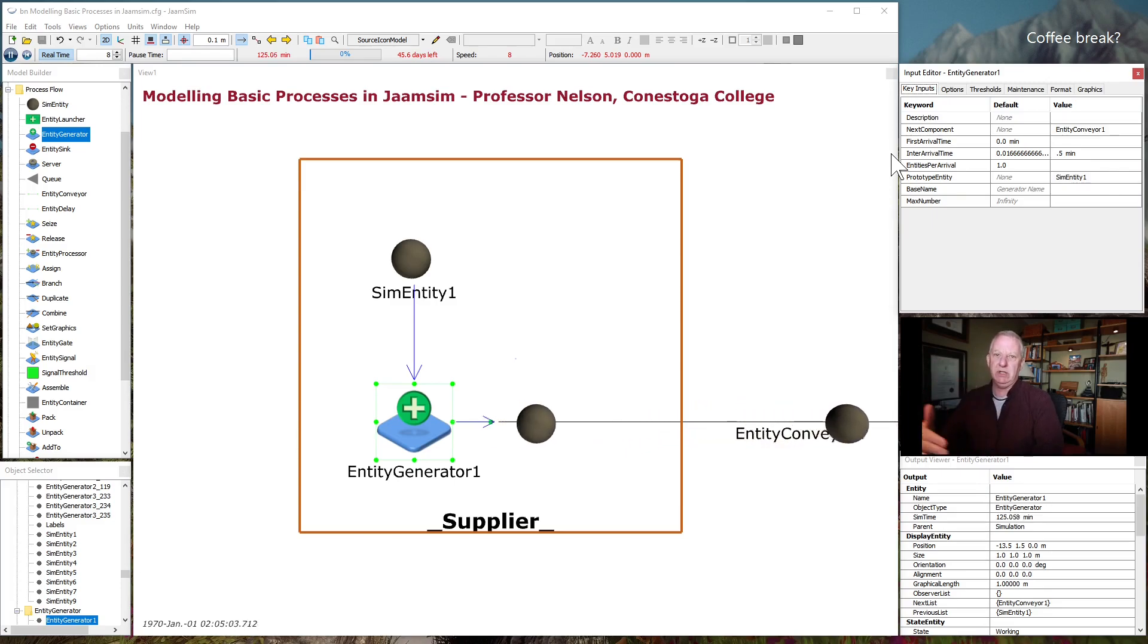Both the sim entity and the entity generator come from this process flow menu here, which is where most of what I'm going to show you today comes from. So the generator then has a number of inputs that you want to define. The first arrival time, for example, when you start your simulation, does it start generating entities right away? Does it introduce product or people into your system immediately, or is there some wait time or some delay? Inter-arrival time, how frequently do entities arrive, and how often, or how many come at a time? I've got mine where one arrives every half minute.